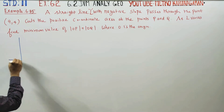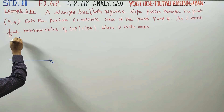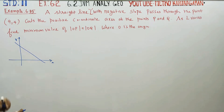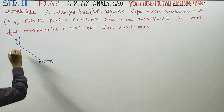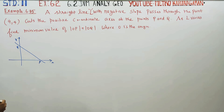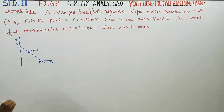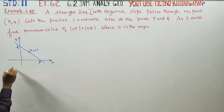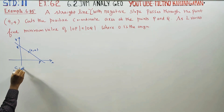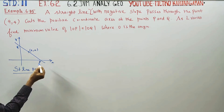For example, this is the x-axis and y-axis. This is a straight line. It passes through (9, 4). If you look at this straight line, this is a straight line P and Q. This is its slope.